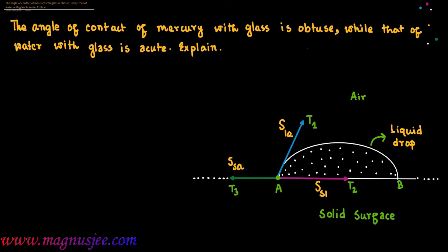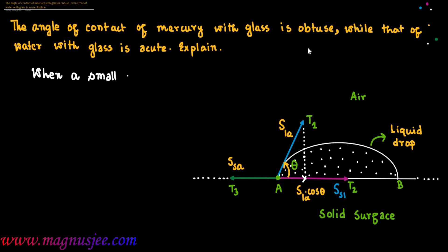Now the surface tension SLA will be resolved in the horizontal direction. SLA acts at an angle theta with the glass or solid surface. This surface tension acting on the liquid-air interface acts at angle theta, and SLA is resolved into rectangular components: the horizontal component acting along the solid-liquid interface is SLA cos theta.